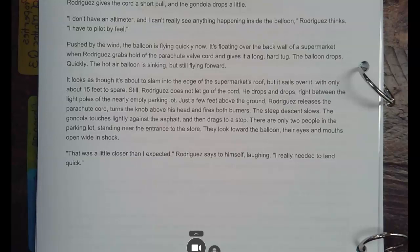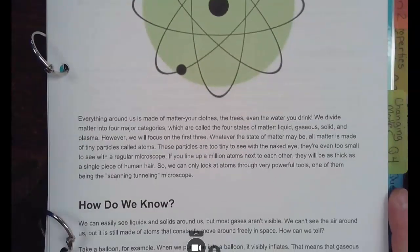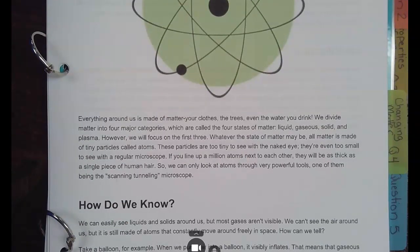And then it drags to a stop. There are only two people in the parking lot standing near the entrance to the store. They look toward the balloon, their eyes and their mouths open wide and shut. I go, what just happened here? That was a little closer than I expected, Rodriguez says to himself laughing. I really needed to land quick. All right. So matter is everywhere. Is this the next page in your packet? I think so, right? Yeah. Okay. Everything around us is made of matter. Your clothes, the trees, even the water you drink. We divide matter into four major categories, which we call four states of matter. Liquid, gas, solid, and they're adding a fourth one. So we talked about liquid, solid, and gas, and now they're adding plasma.